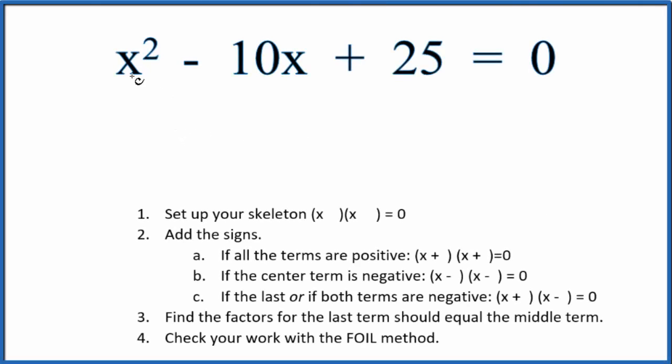In this video we'll factor the equation x squared minus 10x plus 25 equals 0. The first thing we want to do is set up our skeleton equation that looks like this. Next we'll look at the signs.